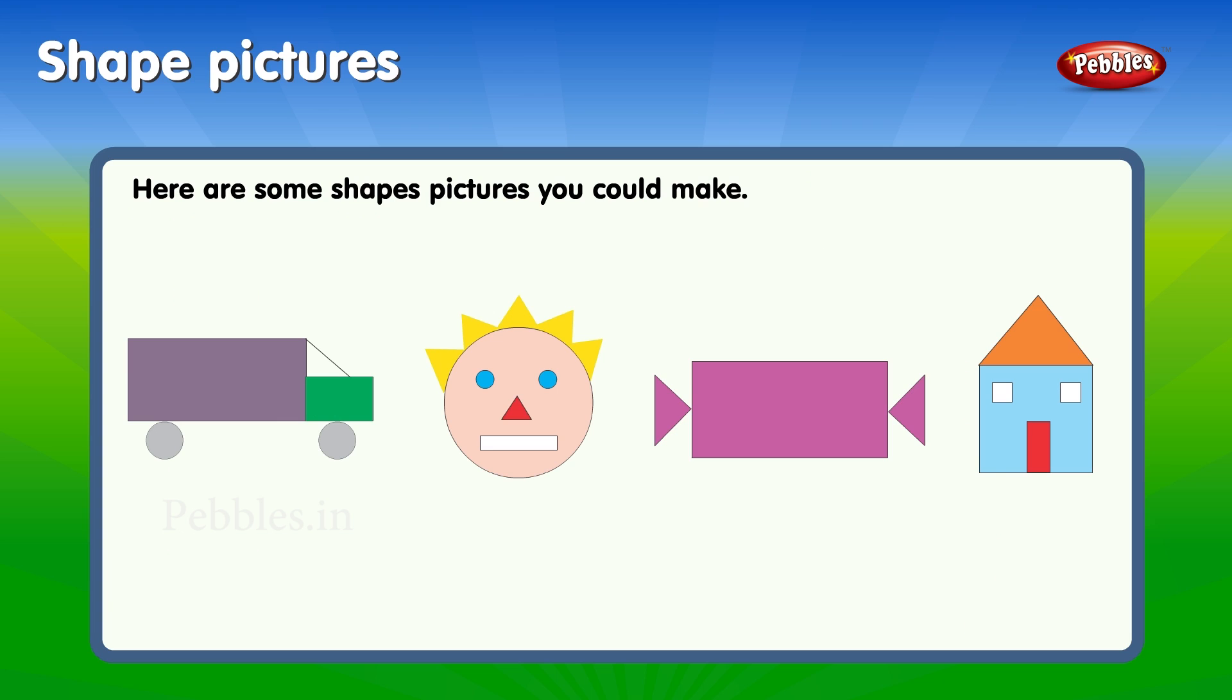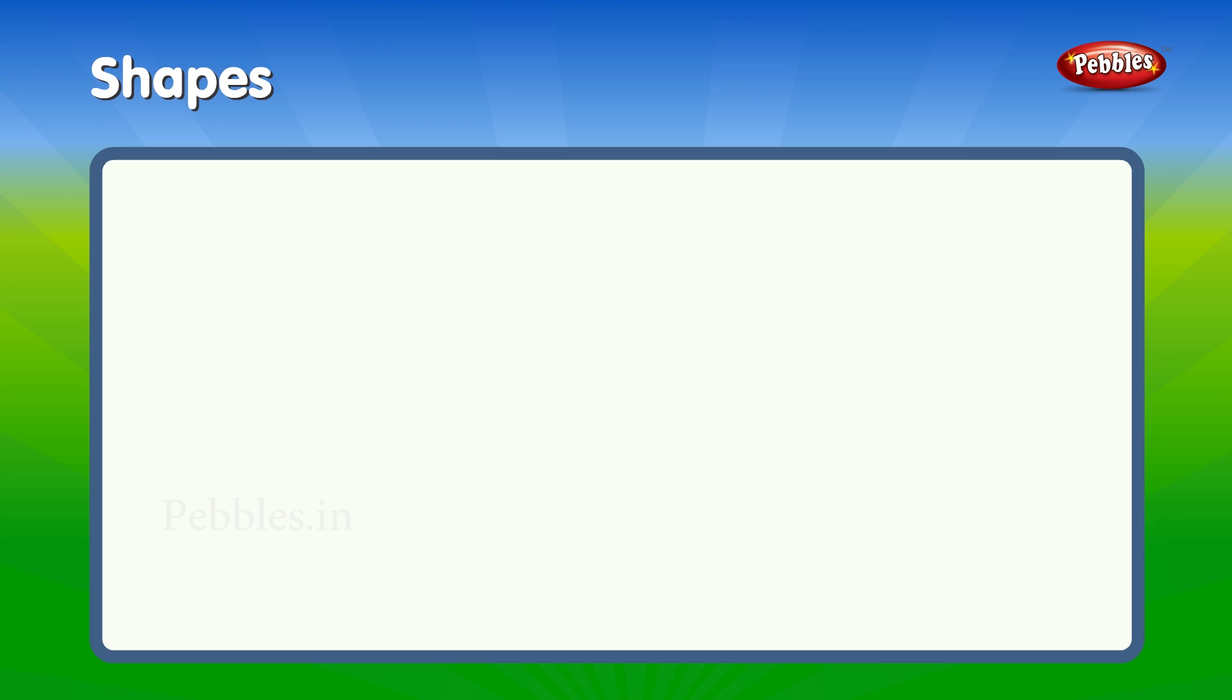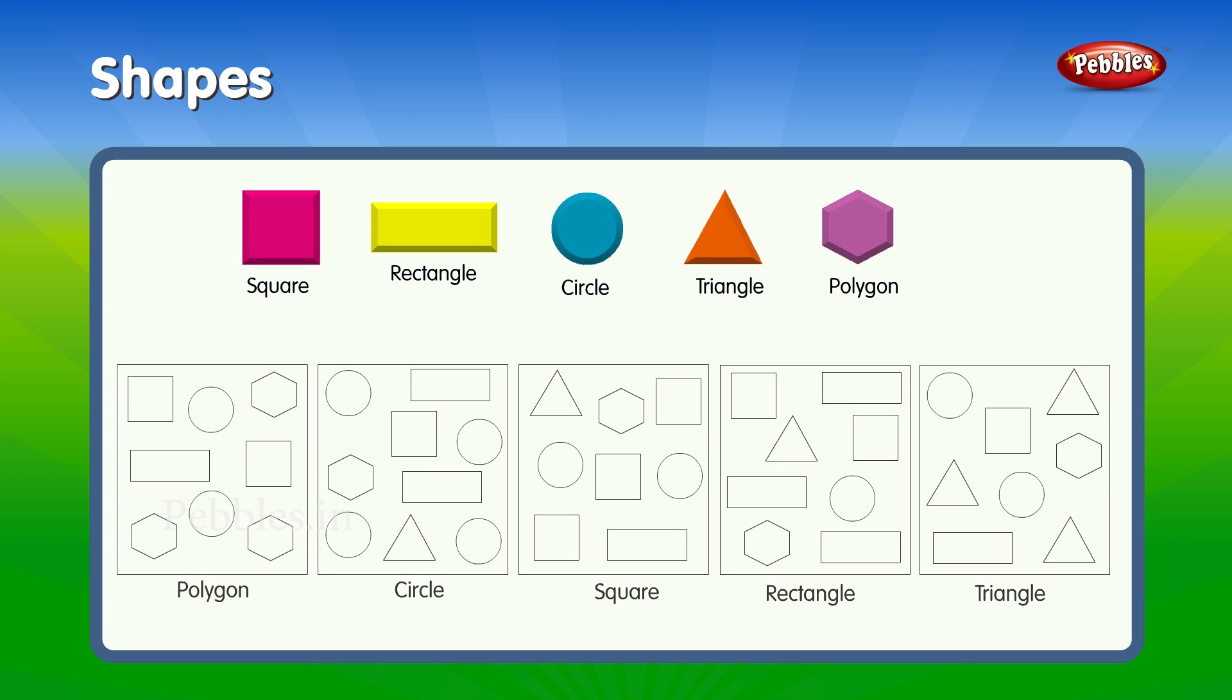Shapes: square, rectangle, circle, triangle, polygon. Color the shapes stated under each square box. Polygon, circle, square, rectangle, triangle, rectangle, cone.